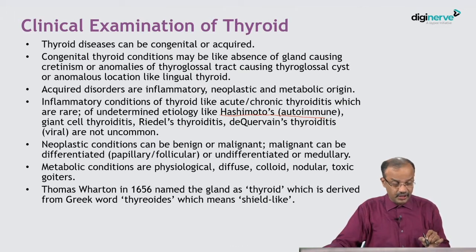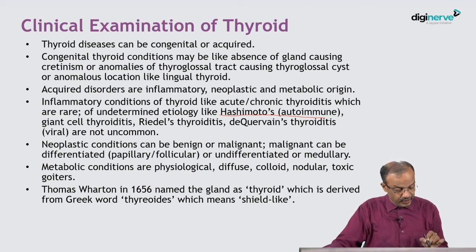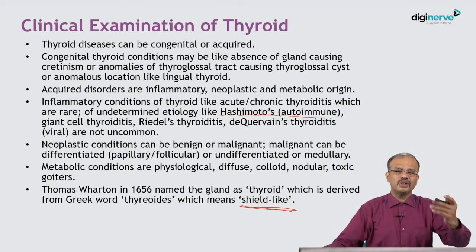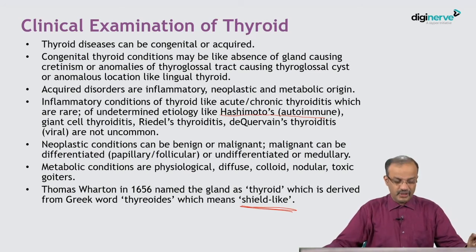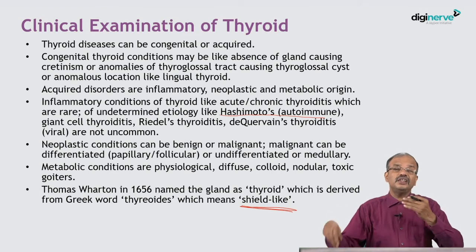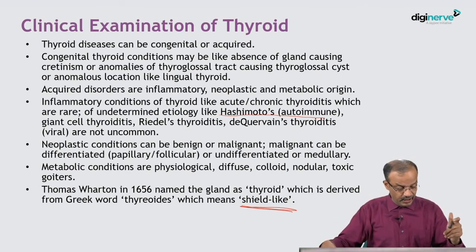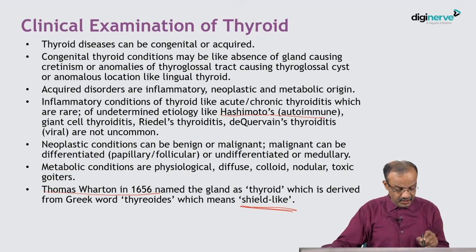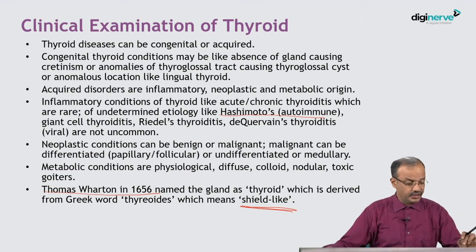Thomas Wharton in 1656 named the gland as the thyroid, which is derived from the Greek word 'thyroidis' meaning shield-like. Remember, thyroid means shield — it covers the front of the neck like a shield. Wharton named this gland nearly 350 to 400 years ago and the same name has persisted ever since.